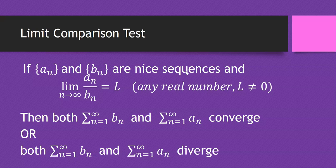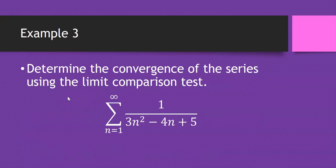If they're essentially growing at the same rate — meaning the limit of a sub n over b sub n equals some non-zero real number — then they both have to converge or they both have to diverge. So the limit as n goes to infinity of a sub n over b sub n means growth at the same rate. Let's look at example three, where we determine the convergence of a series using the limit comparison test.